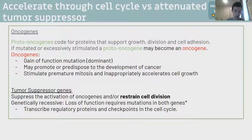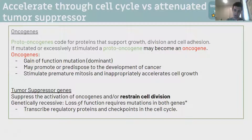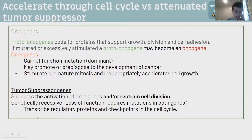The opposite of oncogenes are tumor suppressor genes. These suppress the activation of oncogenes and restrain cell division, so genetically they're recessive. Loss of function genes are generally recessive - they require both alleles to be mutated in order for the mutation to have an effect, whereas gain of function mutations like the oncogene generally only need one allele mutated. Tumor suppressor genes transcribe regulatory proteins and checkpoints in the cell cycle that make sure cells aren't immortal and don't divide if there's damage.